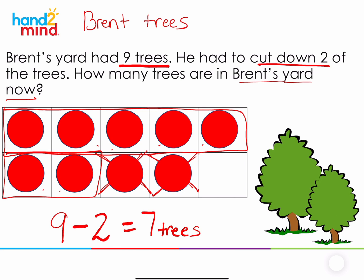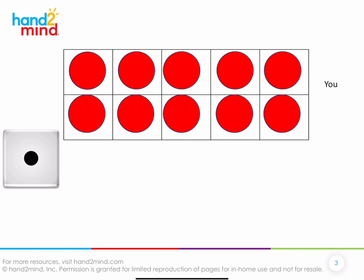So today we're going to play a game. We're always going to start with a 10 frame of 10 counters, and then we're going to roll the dice. That's going to tell us how many counters we need to remove. Then I'm going to do the same thing. Whoever has the greater difference, which is the answer to a subtraction problem, is going to get a point.